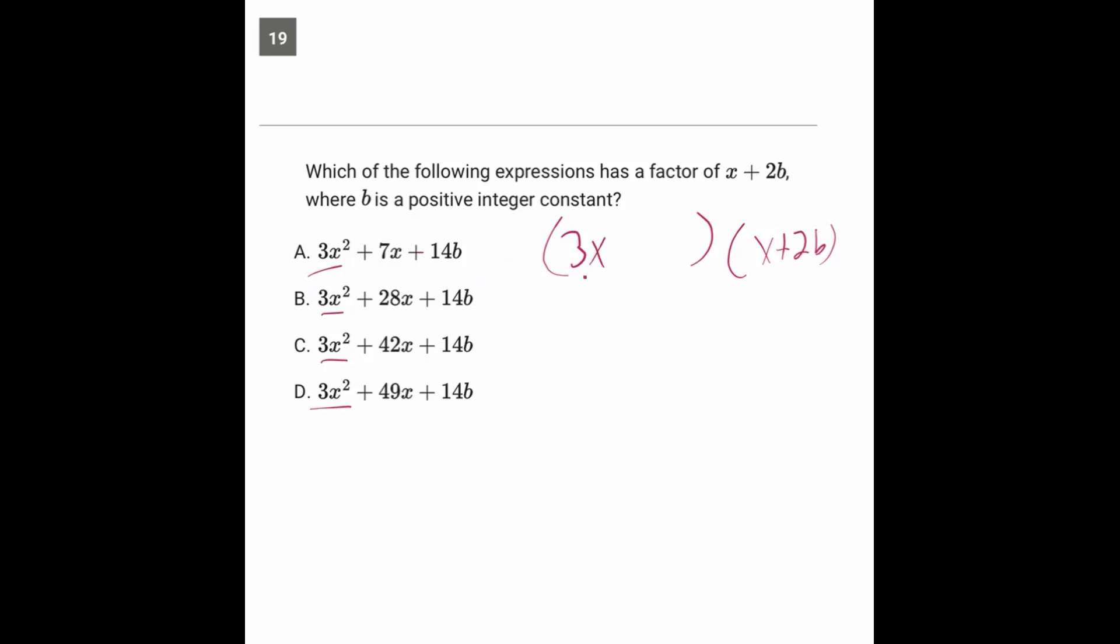So you have to have a 3x right here, because if we were foiling those two, well, we don't really know what number goes in this spot yet, but just imagine if we were foiling right now, first times first would give you the 3x squared. So that's the first part of our setup, is knowing that you have to have a 3x right there.